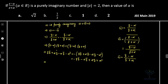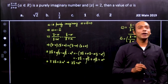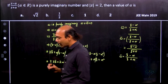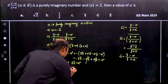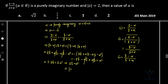Rearranging: z·z̄ + αz − αz̄ − α² = −z·z̄ − αz̄ + αz + α². The αz and αz̄ terms cancel from both sides, leaving 2·z·z̄ = 2α², which implies z·z̄ = α². Since z·z̄ equals |z|², we get |z|² = α², so |z| = α.